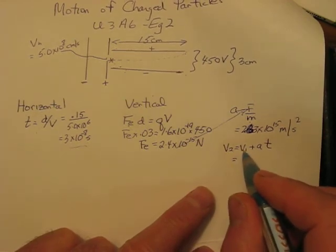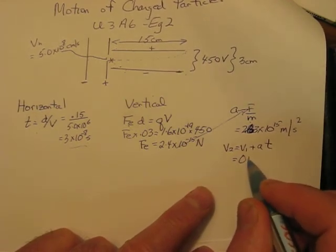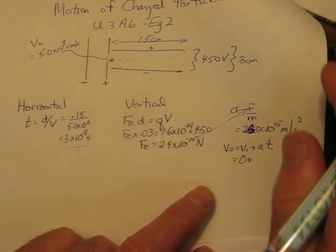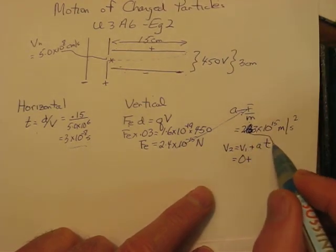What is the initial vertical velocity? Zero. It wasn't accelerating at all vertically. The acceleration is this number right here.